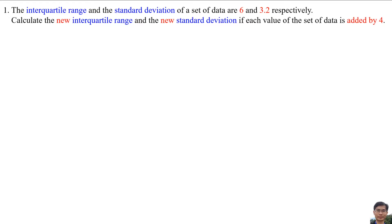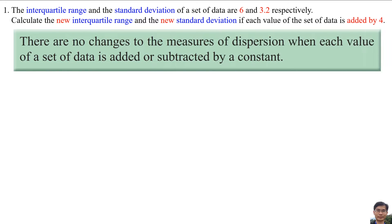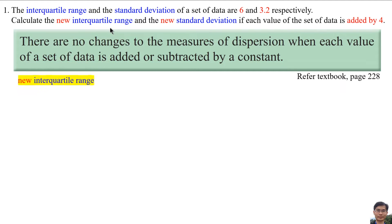The interquartile range and the standard deviation of the set of data are 6 and 3.2 respectively. Calculate the new interquartile range and the new standard deviation if each value of the set of data is added by 4. According to the textbook page 228, there are no changes to the measure of dispersion when each value of the set of data is added or subtracted by a constant. Since each value is added by 4, there are no changes. So the new interquartile range remains the same as the original, that is 6.